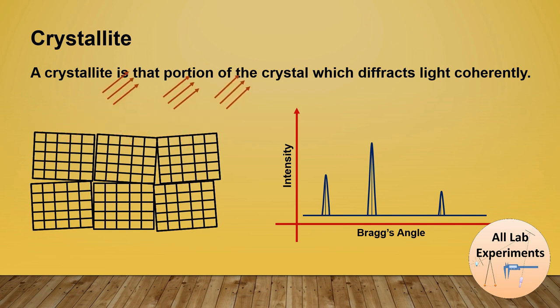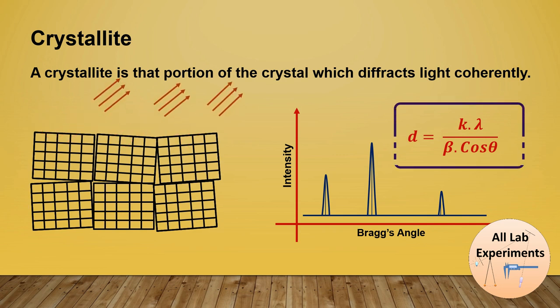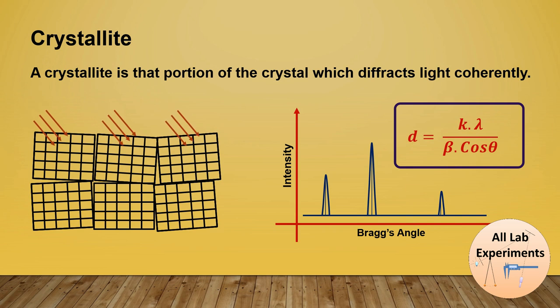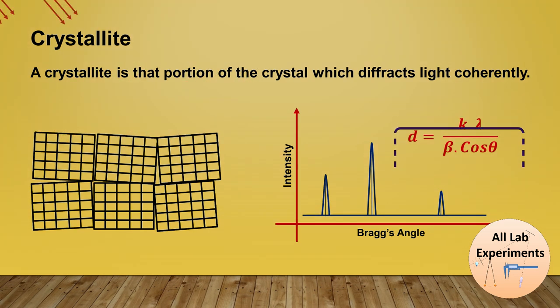The relation between the crystallite size and the full width half maxima of these peaks is known as Scherrer's formula. So in this Scherrer formula, K is a constant, lambda is the wavelength of the X-ray radiation, theta is the angle of incidence of the X-ray radiation, and beta is the FWHM of this peak.